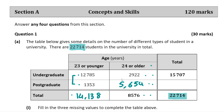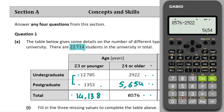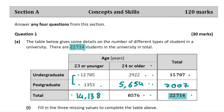For the final value we have the total number of postgraduate students. We can either subtract from the total or add the postgraduate figures: 1,353 and 5,654. Adding those together we get 7,007. That's part one done, and for that question you're going to get five marks.